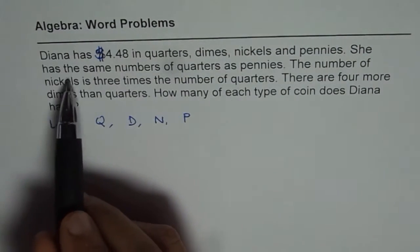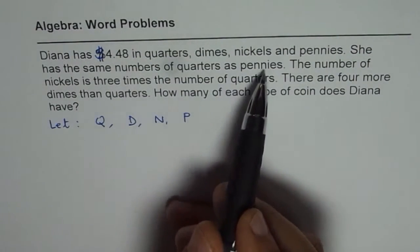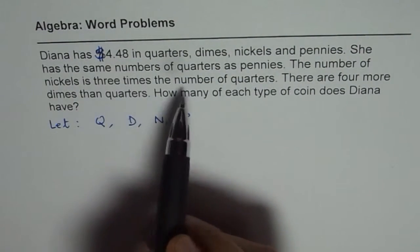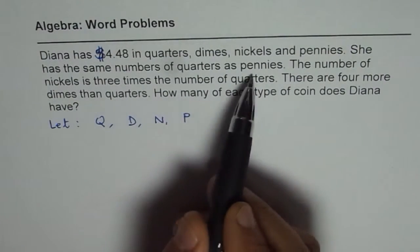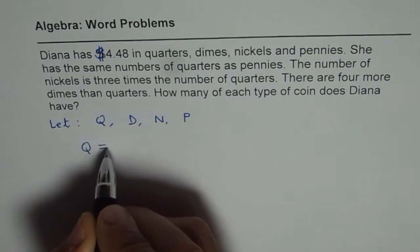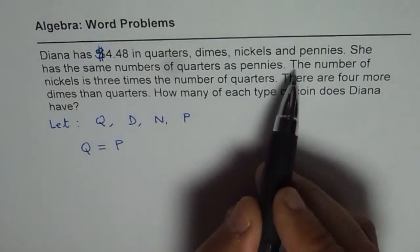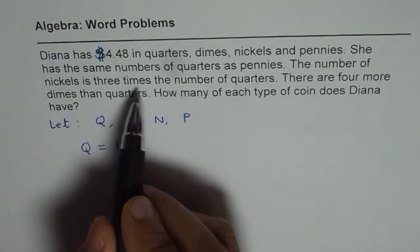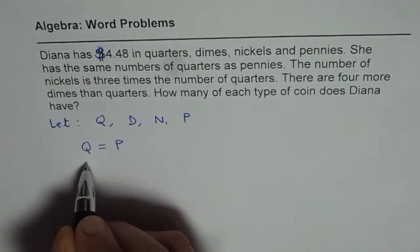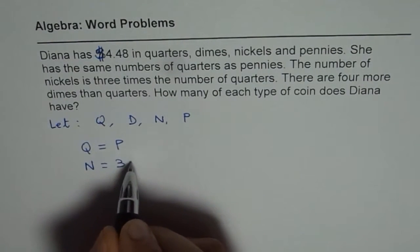She has the same number of quarters as pennies. So we can start writing our equations. Same number of quarters as pennies, that means first equation is Q equals to P. The number of nickels is 3 times the number of quarters, so N equals 3Q.